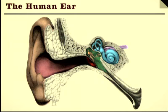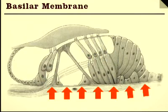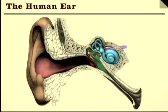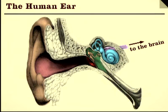We don't know exactly what happens here, but one dominant theory holds that specific places on the basilar membrane detect particular frequencies. These nerve signals then go to your brain, which interprets them and provides the sensation of hearing. Like many other brain functions, we don't understand this interpretation particularly well.